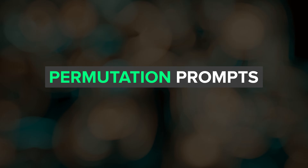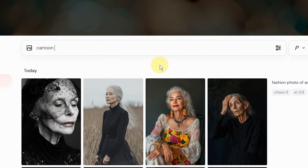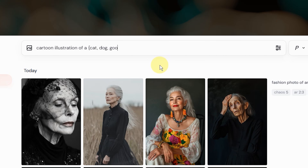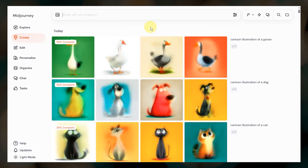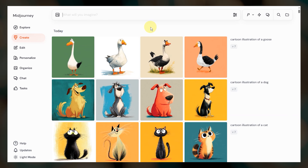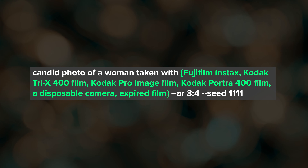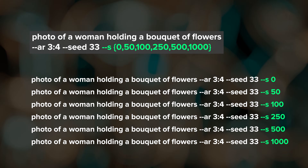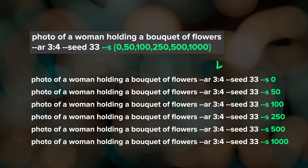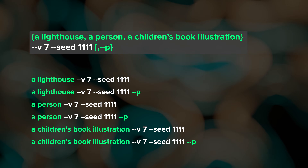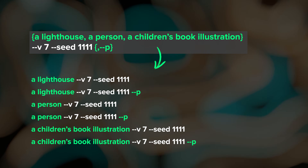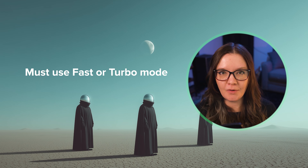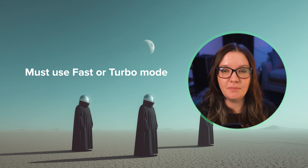If you'll be running multiple prompt tests, I highly recommend trying a permutation prompt. Permutation prompts let you submit multiple jobs at once using a single prompt. Place comma-separated items inside a pair of curly brackets and Midjourney will run a separate job for each item. For example, to test different film types, submitting this prompt will run six different jobs. You can also use it with a parameter like stylize, or combine text and parameter permutations to test prompts with and without personalization. Just remember that permutation prompts only work in fast or turbo mode, not relax mode — so keep an eye on your fast hours because they can go quickly.